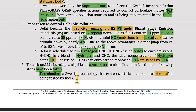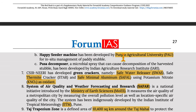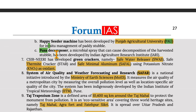To curb stubble burning, a significant contributor to air pollution in North India, the following steps have been taken: Torrefaction — a Swedish technology that converts rice stubbles into biocoal — is being tested by India. The Happy Seeder machine has been developed by Punjab Agricultural University for in-situ management of paddy stubbles. Pusa Decomposer, a microbial spray that causes decomposition of harvested stubble, has been developed by IARI.